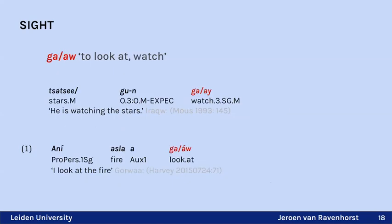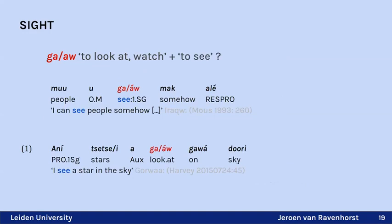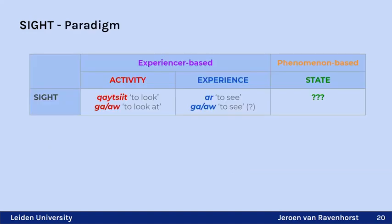There is also the verb 'gaal,' meaning 'to look at' or 'to watch,' which does take a direct object. Examples include 'he is watching the stars' and 'I look at the fire.' However, 'gaal' is also sometimes translated as 'to see,' which is unclear — it may reflect grammatical context or genuine ambiguity. To summarize sight: 'kaitzid' and 'gaal' are activity verbs, 'ar' and possibly 'gaal' are experience verbs, and no phenomenon-based verbs are found.